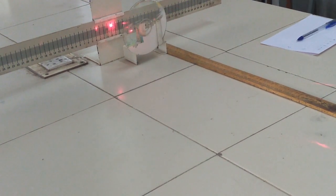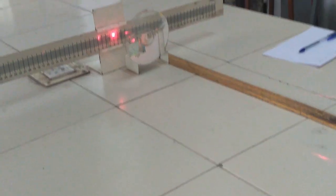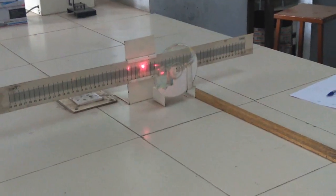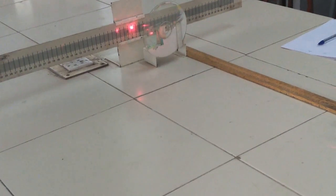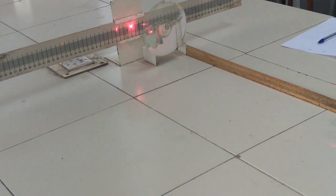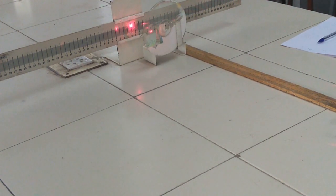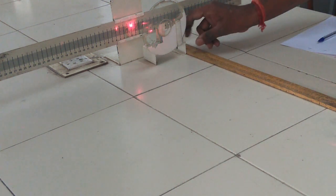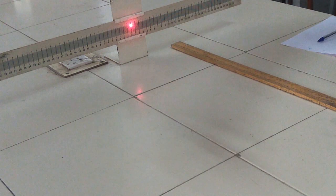Fix the transparent CD in the stand using the clip, in such a way that the reflecting side should face the laser source. Here it is producing the central maxima and principal maxima.